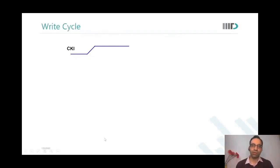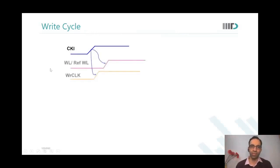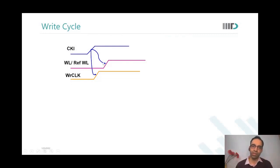Let us look at the signal flow in terms of timing diagrams. Clock comes and leads to generation of what is called CKI and CK internal. After decoding happens, we will generate what is called a word line and reference word line. On the IO side, we will generate a write clock.